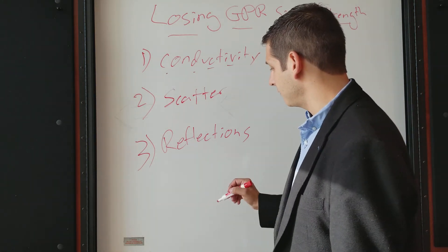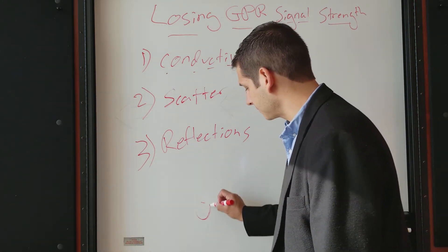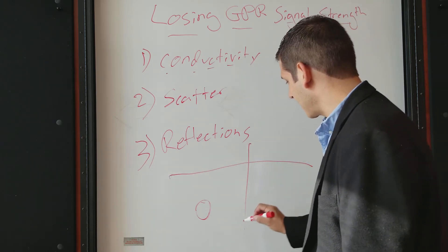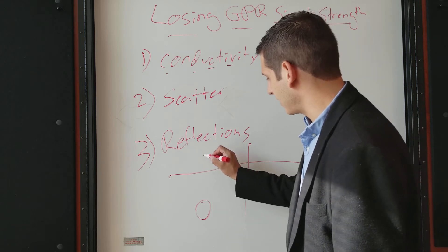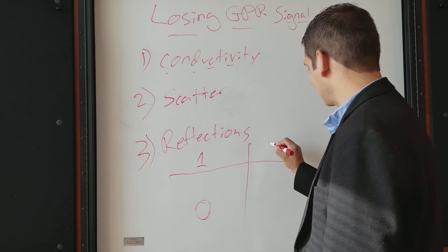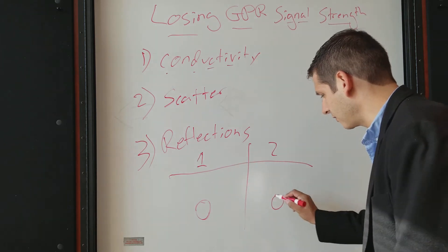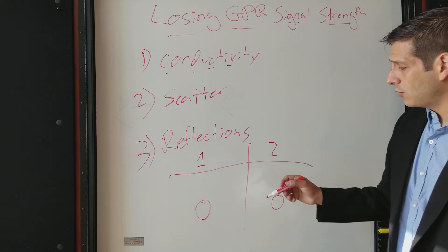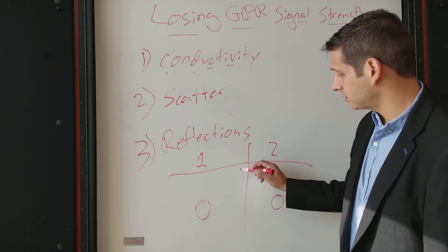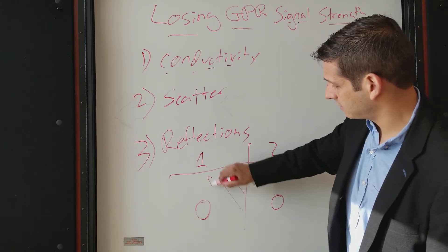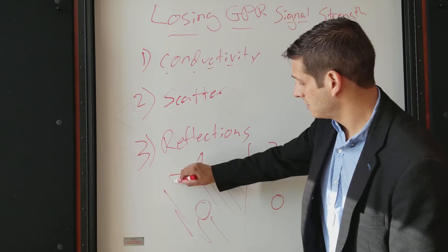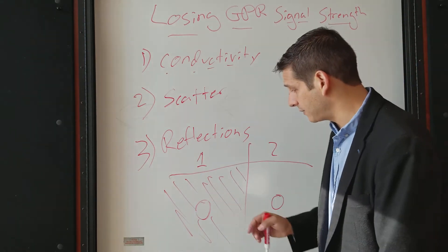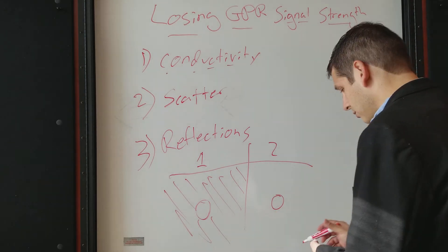And so what's important here is, let's say that you're looking for a pipe. Here's your ground surface, and we have two different case studies. We have case study one and case study two, and you're looking for this pipe down here. In case study one, it's just clay, it's clay soils from the top. They're on top of clay, and you're trying to identify this pipe down here.